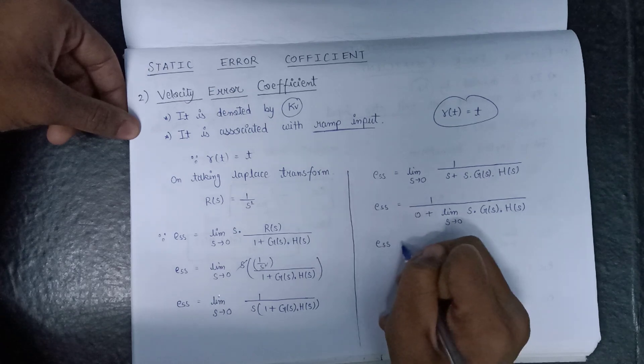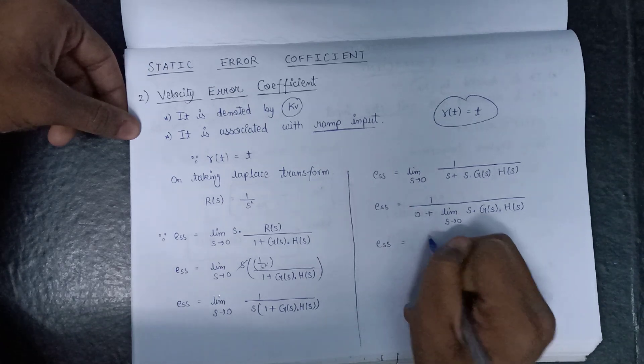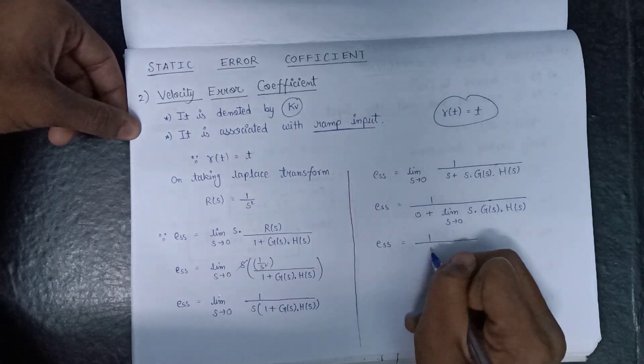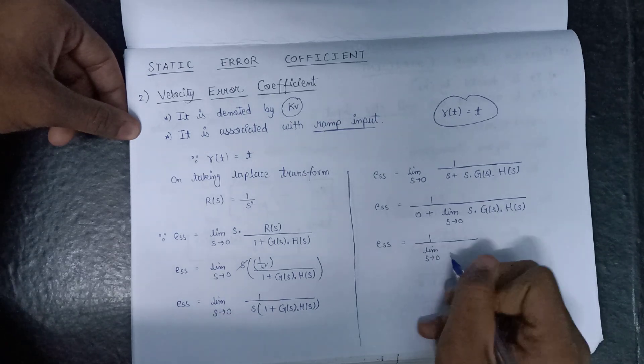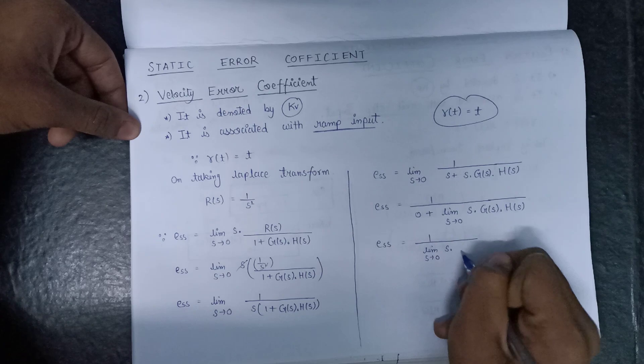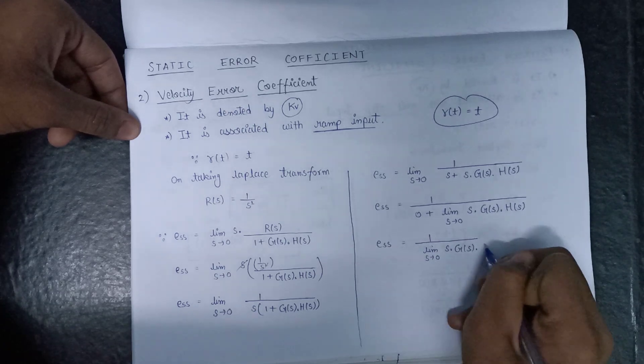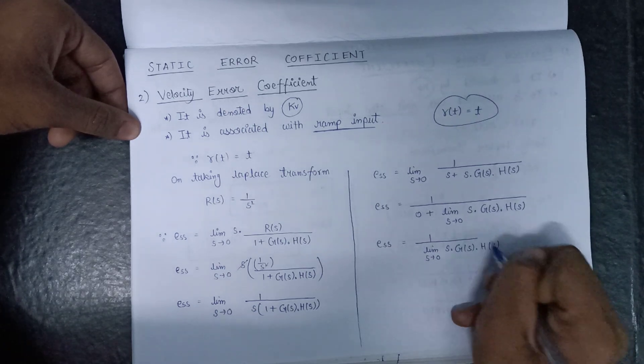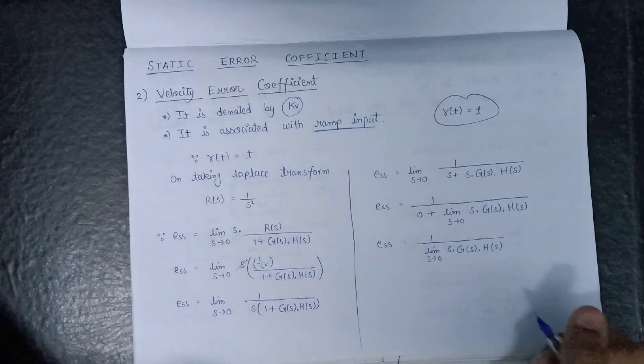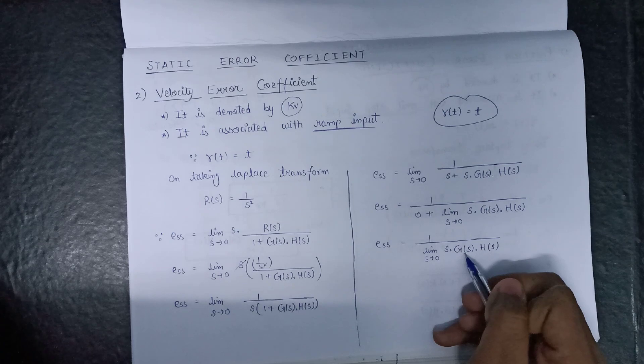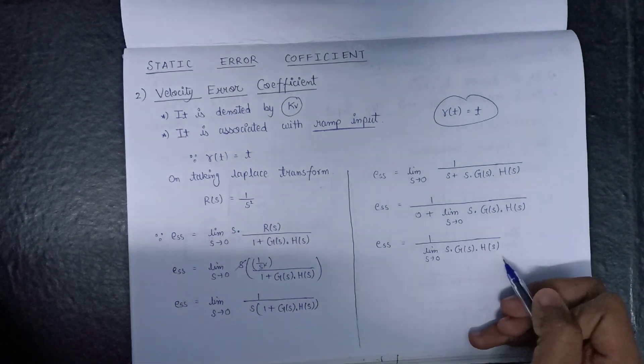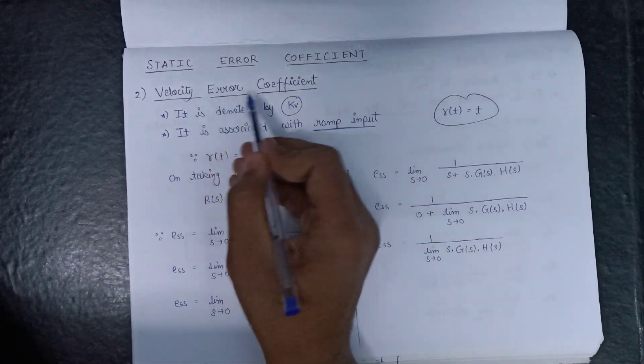Final expression for steady state error will be 1 over limit s tends to 0, s into G(s) into H(s), and this limit s tends to 0, s into G(s) into H(s) is nothing but velocity error coefficient.